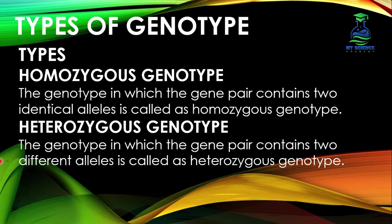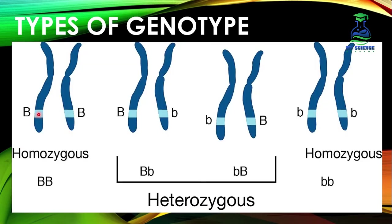What is homozygous genotype? Homozygous means having identical or same alleles of a gene pair. The genotype in which the gene pair contains two identical alleles is called homozygous genotype. For example, capital B capital B, or small b small b — both are identical alleles for a gene pair, so these are called homozygous genotype.